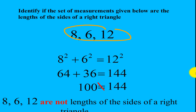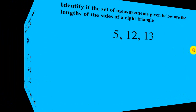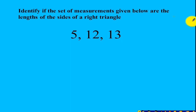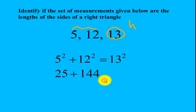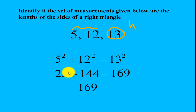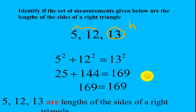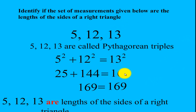We say the lengths of the sides represent a right triangle only if they satisfy the Pythagorean theorem. Second example: 5, 12, and 13. The legs will be 5 and 12, and the hypotenuse will be 13. Adding the squares of the two legs: 5 squared plus 12 squared — is it equal to 13 squared? 5 squared is 25, 12 squared is 144, 13 squared is 169. 25 plus 144 equals 169. Since the left side equals the right side, we say that 5, 12, and 13 are lengths of the sides of a right triangle. If the sides satisfy the Pythagorean theorem, we call these three numbers Pythagorean triples.